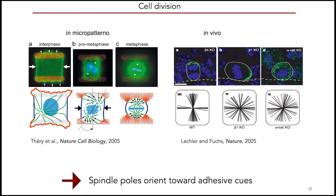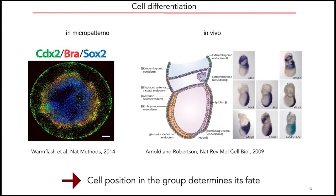Cell division can also be studied on micropatterns. On controlled geometries, the mitotic spindle poles orient toward the adhesive sides of the rounded cell — exactly what is seen in mouse skin epidermal cells, where spindle poles orient toward the contact with the basement membrane. When cell adhesion is impaired, mitotic spindles become random. Both in vivo and on micropatterns, spindle poles tend to orient toward adhesive cues.